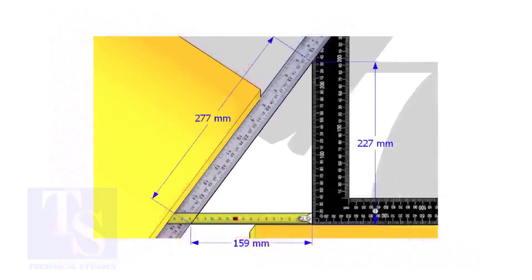Assume these are the dimensions. Let us calculate the included angle. If you apply the sine rule, the angle will be: 159 divided by 277, then shift sine.